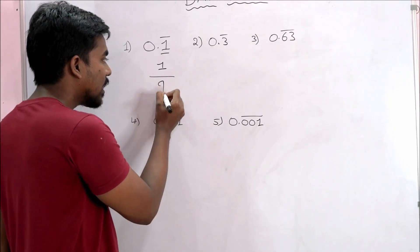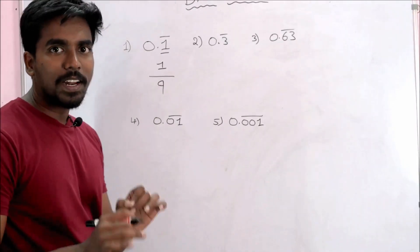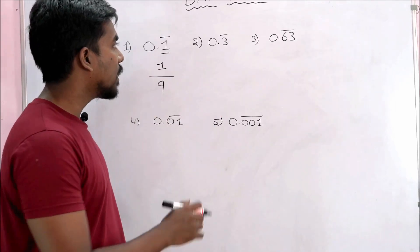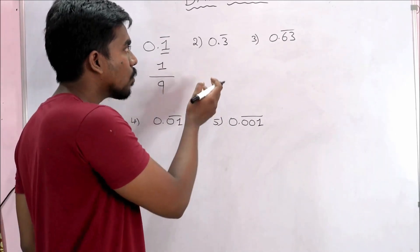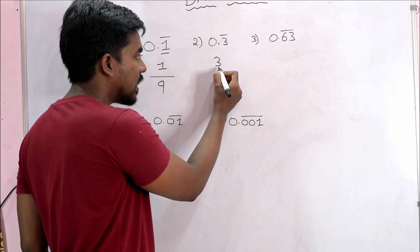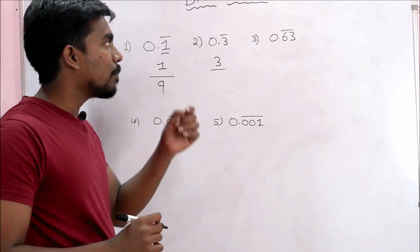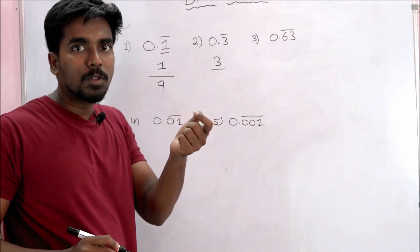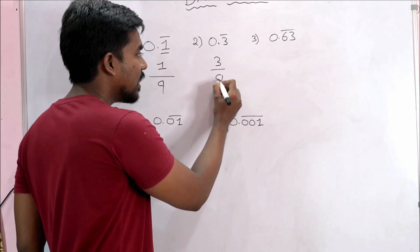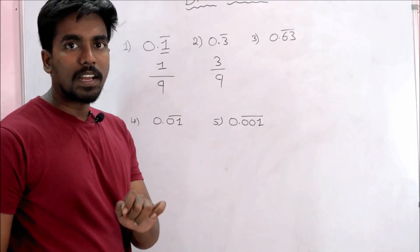So if you want to say 0.3 bar, three repeating — the bar means any numbers with one number, single digit: nine. So this is the answer — the denominator is 9.